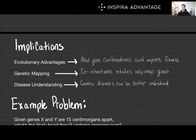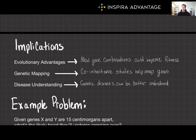The implications of this are pretty huge. First, general evolutionary advantages: new gene combinations can offer survival benefits. Second, genetic mapping: the study of gene co-inheritance can help map gene locations using centimorgans and math — something biologists typically love. Third, disease understanding: some genetic diseases can be studied via genetic linkages.